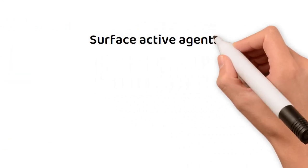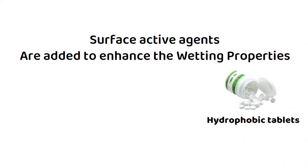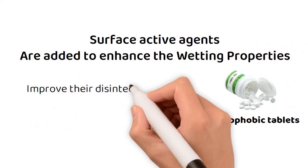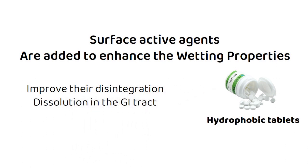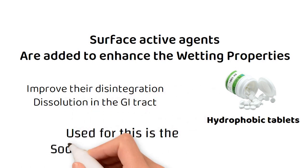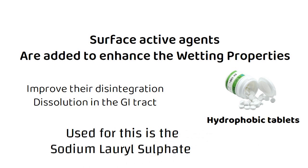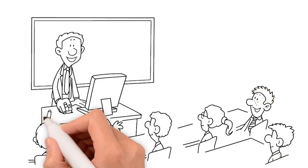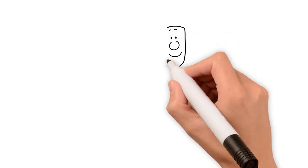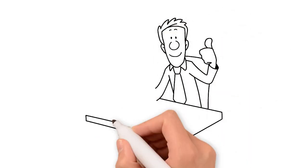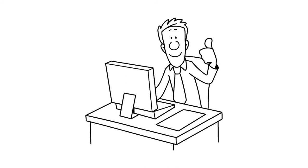Surface active agents are added to enhance the wetting properties of hydrophobic tablets and thus improve their disintegration and dissolution in the GI tract. One of the most popular choices used for this is sodium lauryl sulfate. So we have discussed the main categories of excipients used in tablet manufacturing. Until next time, as always, stay fab wherever you are!